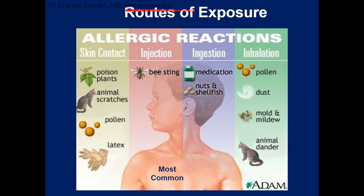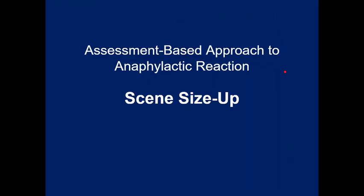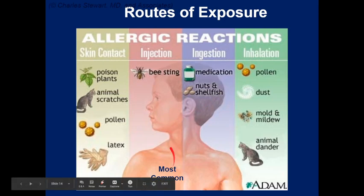There are multiple routes of exposure: contact with plants, cat scratches, breathing in pollen, touching latex. You can also be stung by a bee, or ingest or inhale things. Ingestion of foods is likely more common as a trigger than bee stings overall.